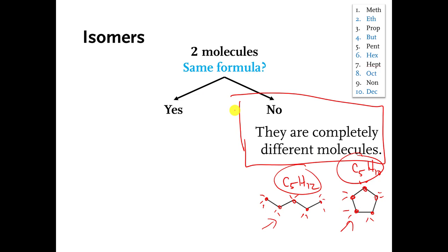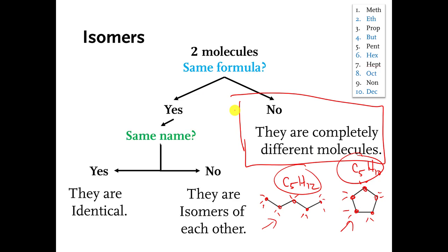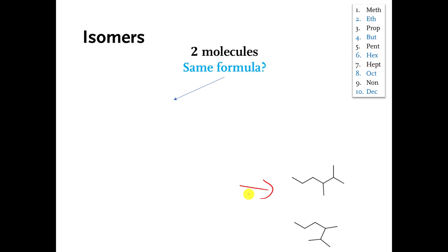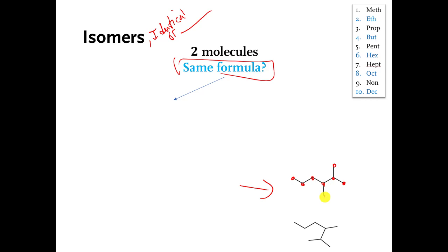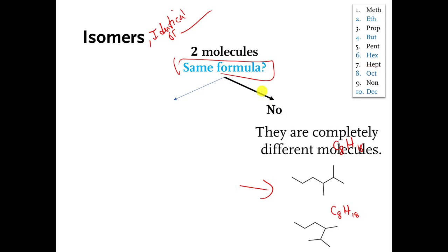Here are two more molecules. Are they isomers, identical, or totally different? Do they have the same formula? Both have 8 carbons, and they both have 18 hydrogens, so they have the same formula. The answer to the first question is yes.